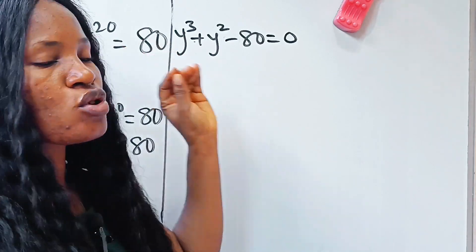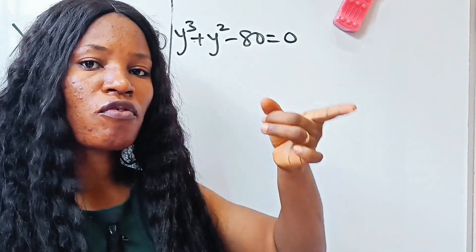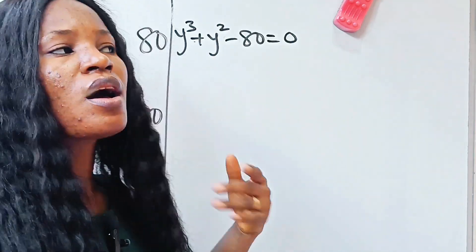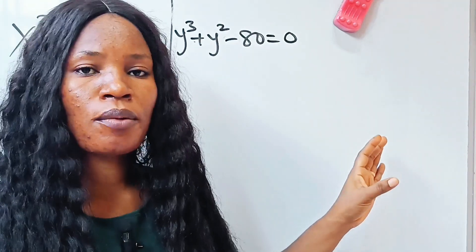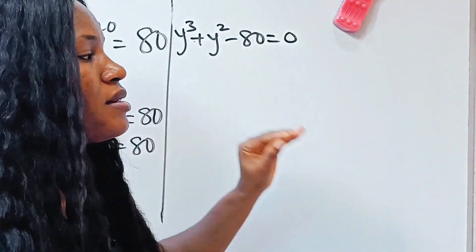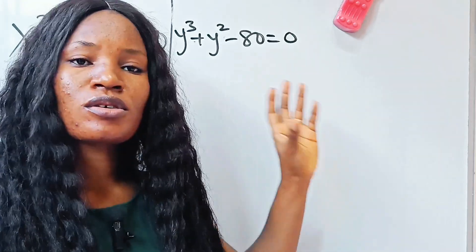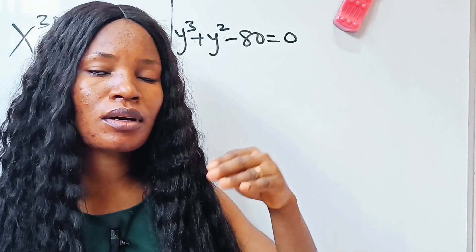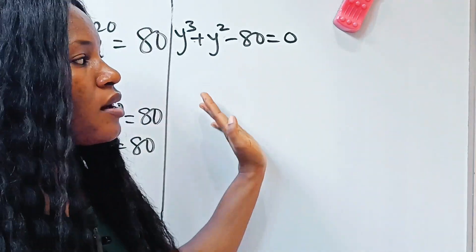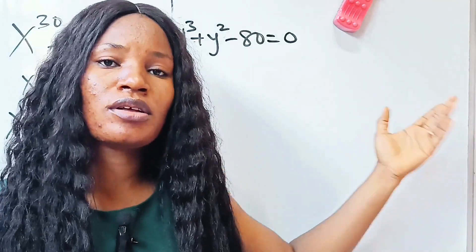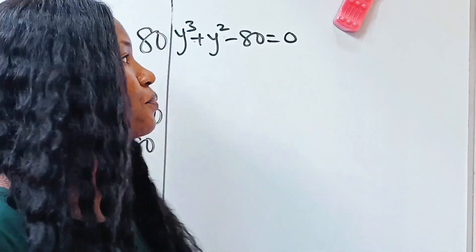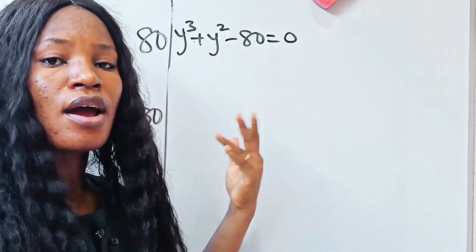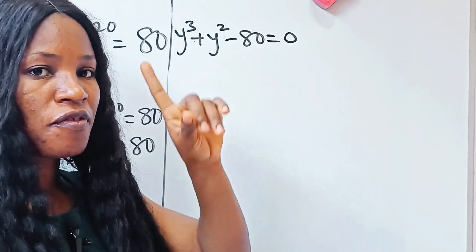We are going to use trial and error to get the first value of y, so that we can then use synthetic division to get our quadratic equation. I'll also leave an end screen where I explain in detail the different methods you can use to solve cubic polynomials.